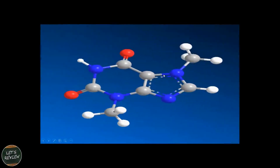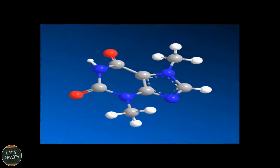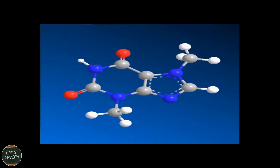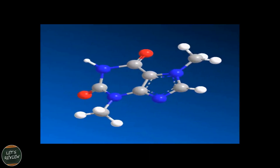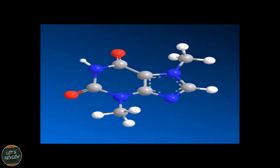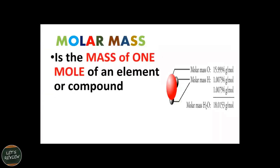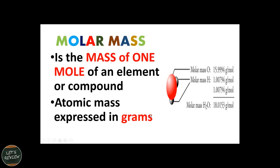In continuation of our review and lesson about compounds, this time we're going to get the molar mass of a compound. When we say molar mass, it is the mass of one mole of an element or compound. The atomic mass is expressed in grams. Let's use H₂O or water as an example — in this chemical formula we have two atoms of hydrogen and one atom of oxygen, and we need to get the total molar mass of the water compound.